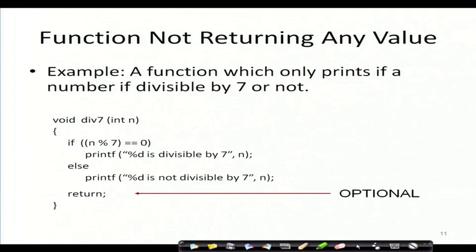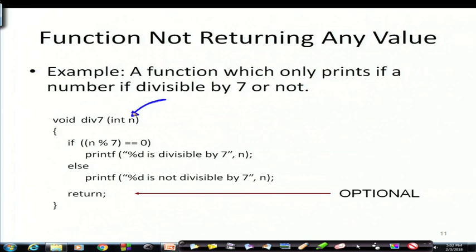In the earlier lecture we have seen how a function can be invoked and it returns values. As we had mentioned, it is not always the case that a function will return a value. Here is an example: the function div7, whose purpose is to find out whether a particular number passed to it as a parameter is divisible by 7 or not.